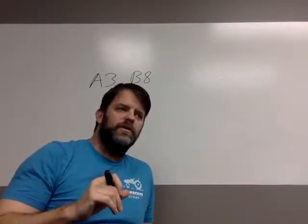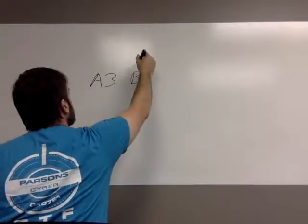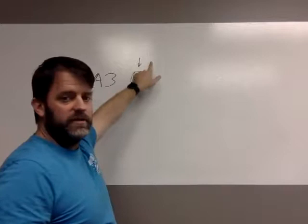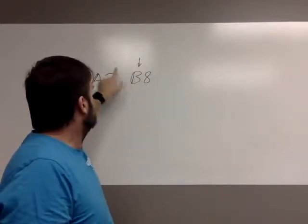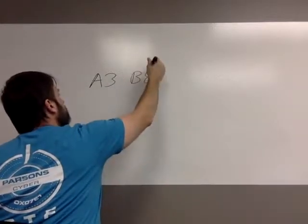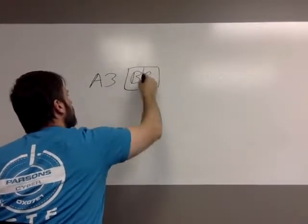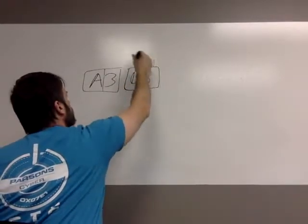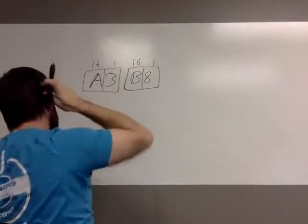The key thing to remember is that in a byte, this is going to be the 16s place and this is the ones place. If we're just interested in these as individual bytes, we put them in a box the same way we did with binary — you've got the ones place and the 16s place for each byte.